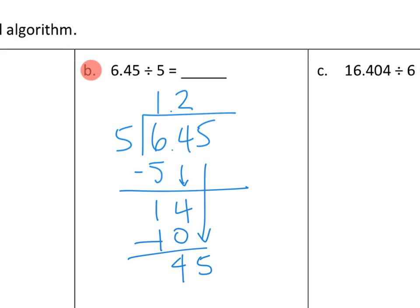We bring down our hundredths to make 45 hundredths. Rather than four tenths and five hundredths, we call that 45 hundredths. And 45 hundredths divided into five groups means we put nine hundredths in each group — nine times five is 45, so we have nothing left. Our quotient is 1.29: 6.45 divided by 5 equals 1.29.